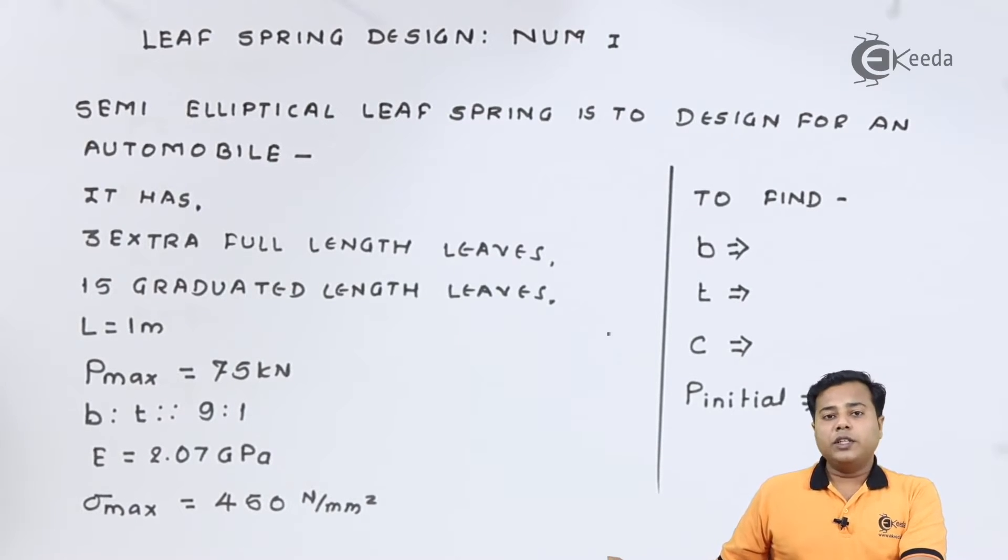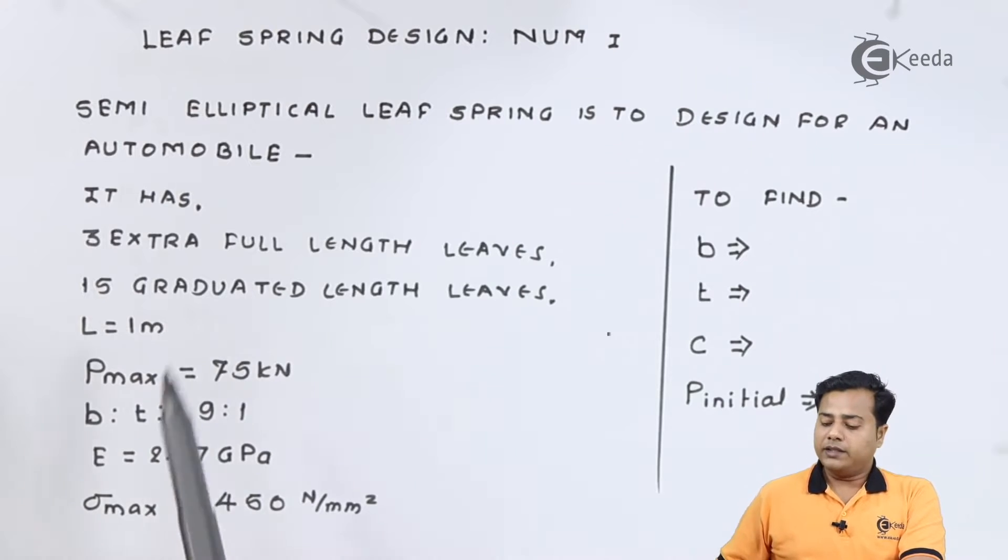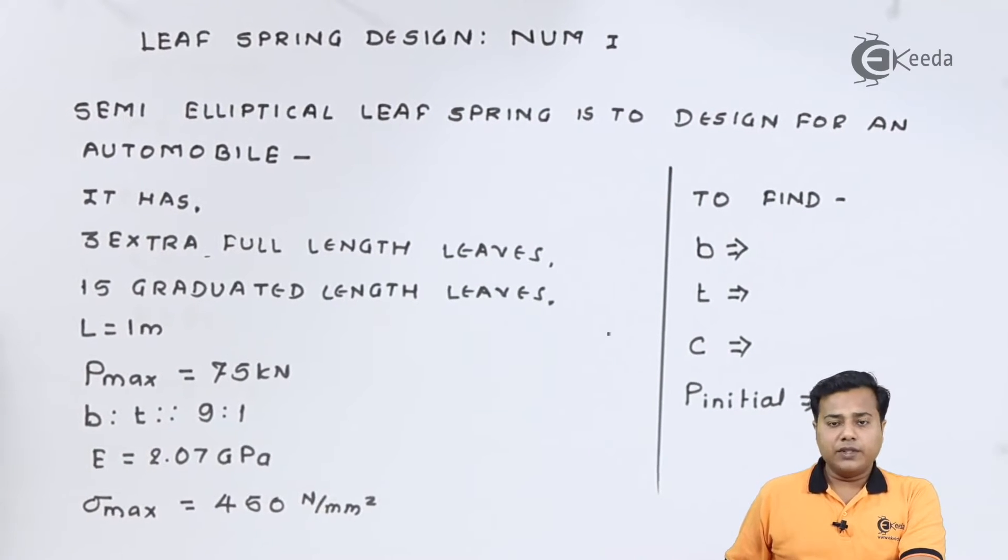Students, you can see the problem statement on your screen which says that a semi-elliptical leaf spring is to be designed for the given data. It has 3 extra full length leaves, 15 graduated length leaves.